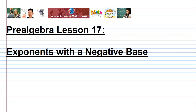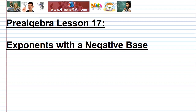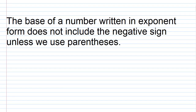In this lesson we're going to talk about exponents with a negative base. The first key detail is that the base of a number written in exponent form does not include the negative sign unless we use parentheses. So if you have something like negative 5 and you want to put an exponent on it, you have to use parentheses to make negative 5 the base.